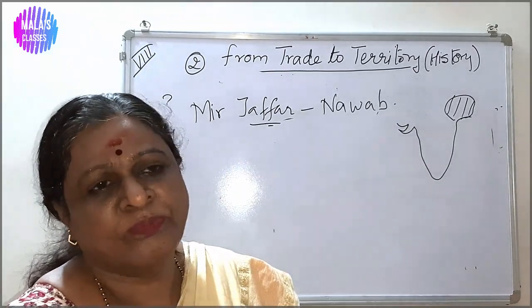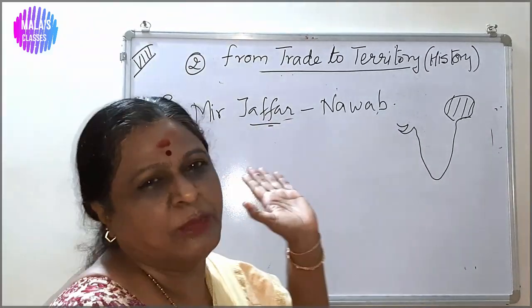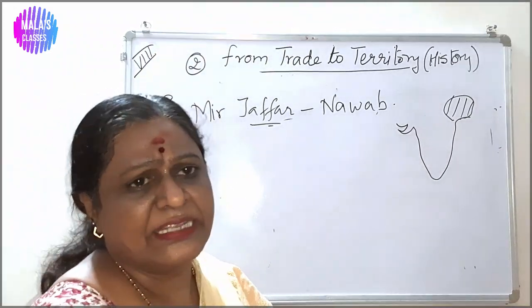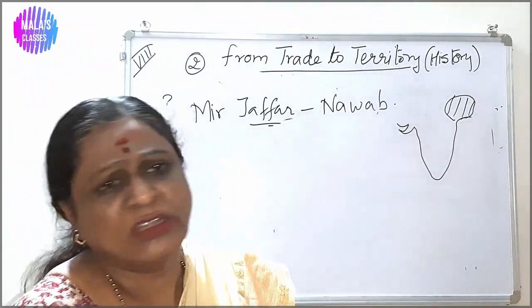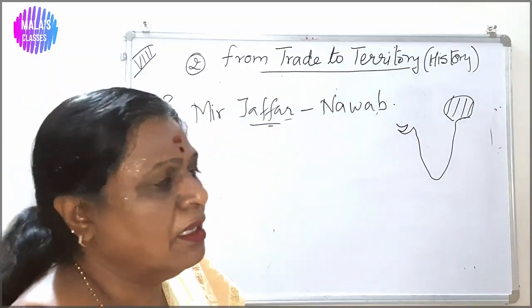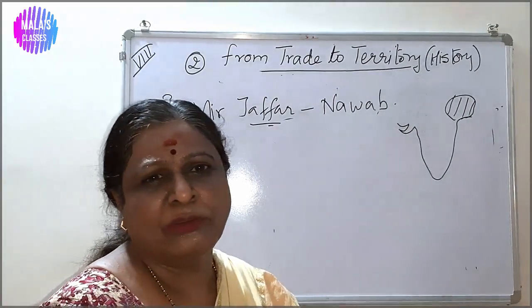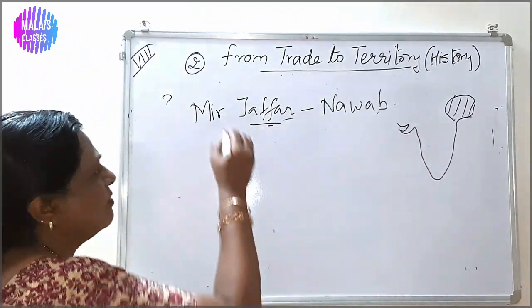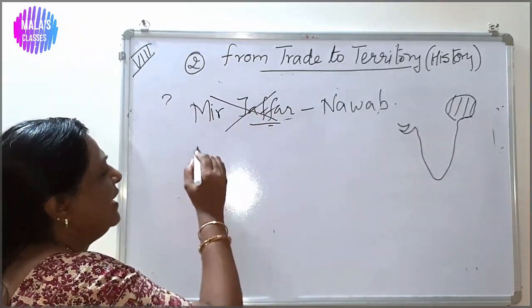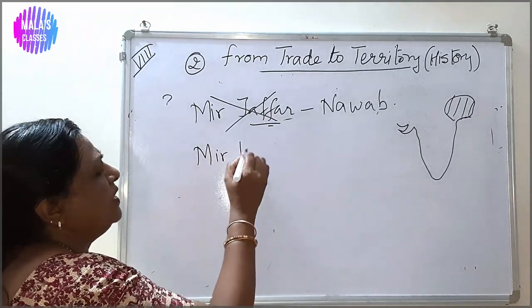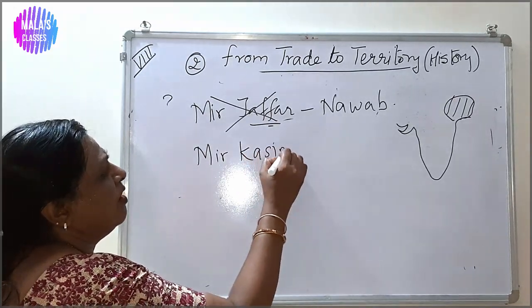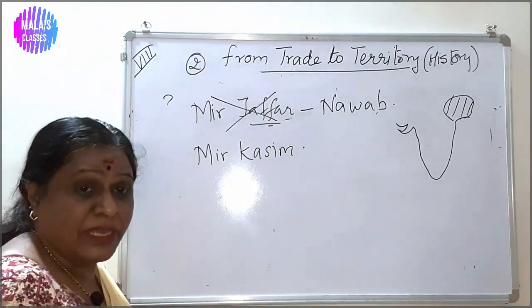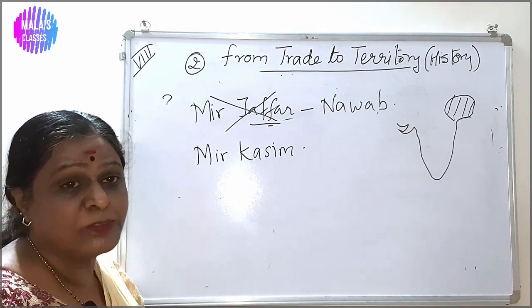Mir Jafar started saying he didn't have so much money to keep giving the British. His coffers were getting empty — the British were not paying any taxes yet getting all the concessions. Then the British realised that Mir Jafar was becoming too difficult to handle, so they removed him as Nawab and made his son-in-law Mir Kasim the Nawab of Bengal. They were making and removing Nawabs and amassing as much wealth as possible.